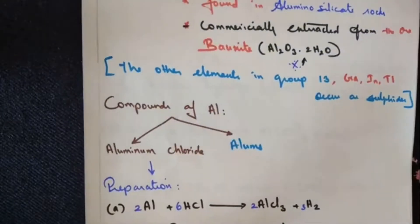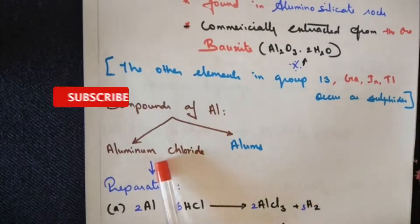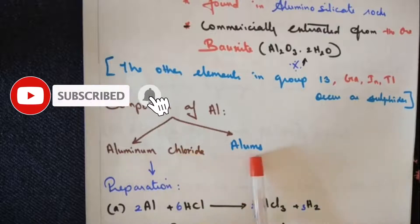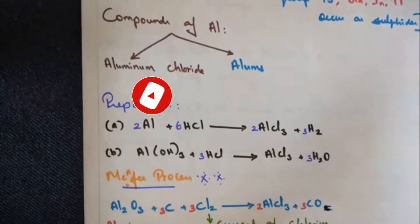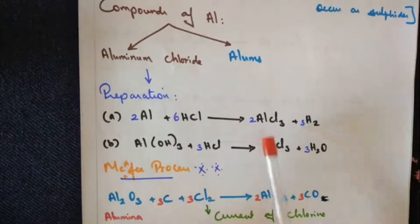For your syllabus you will be learning two compounds of aluminium: aluminium chloride and alums. When we move to the preparation of aluminium, there are three preparations, of which one is very important. The other two are for your knowledge purpose.